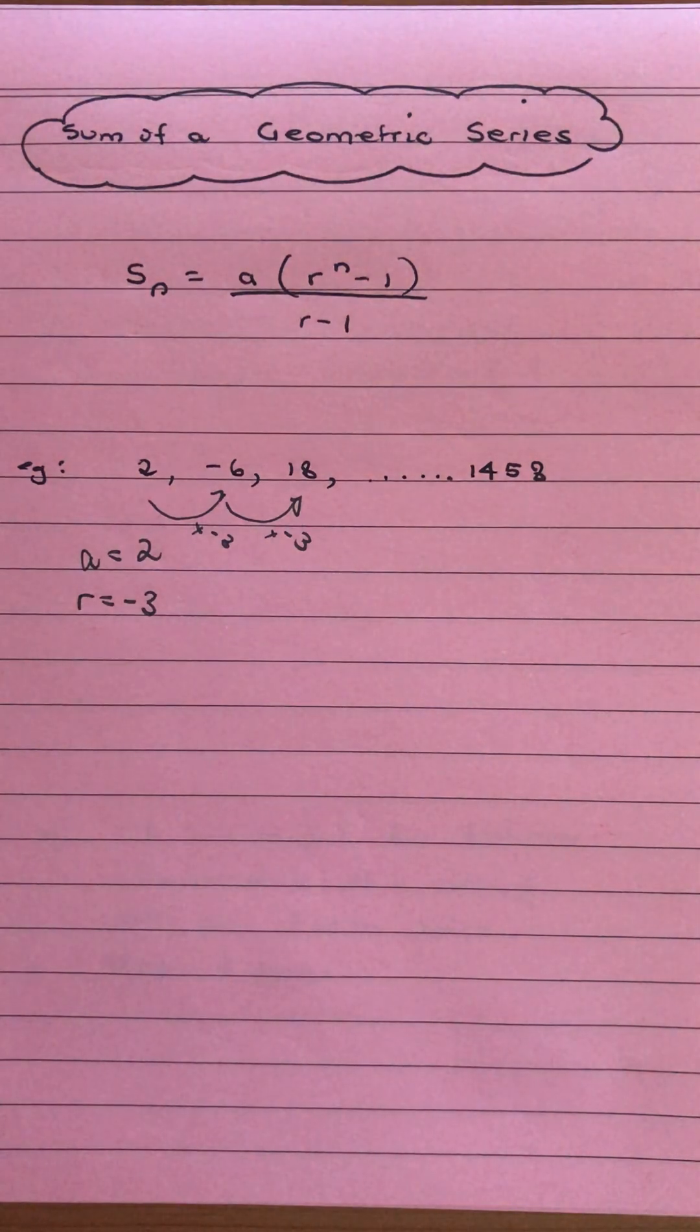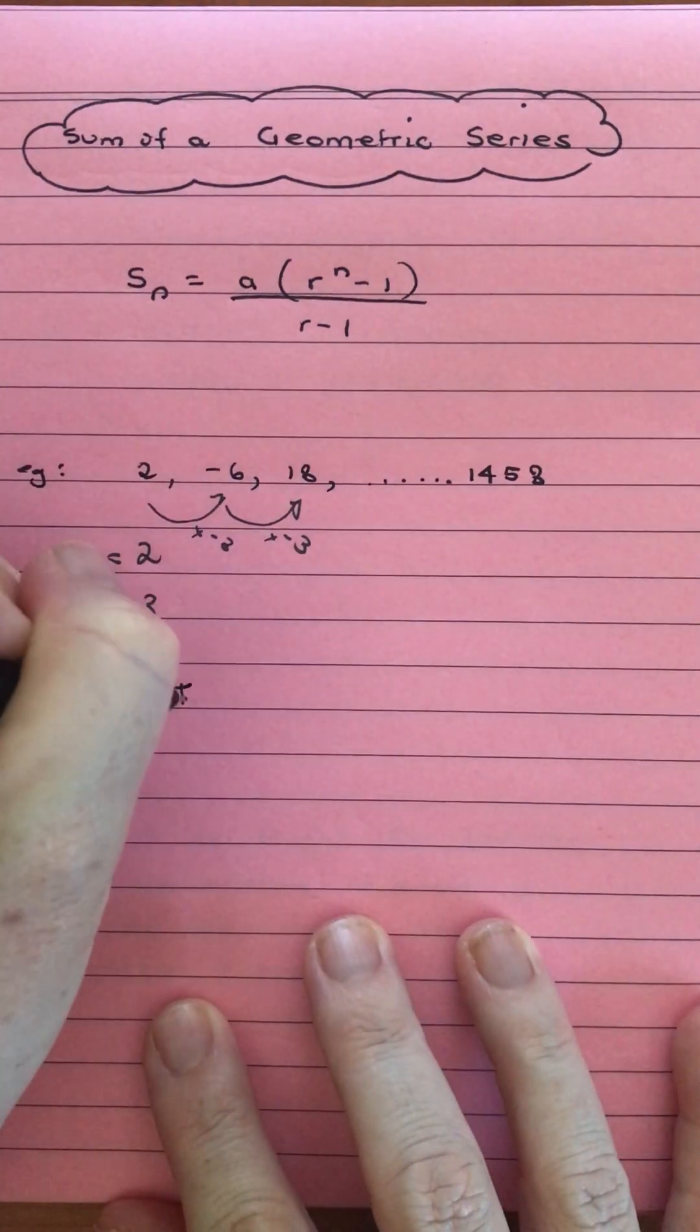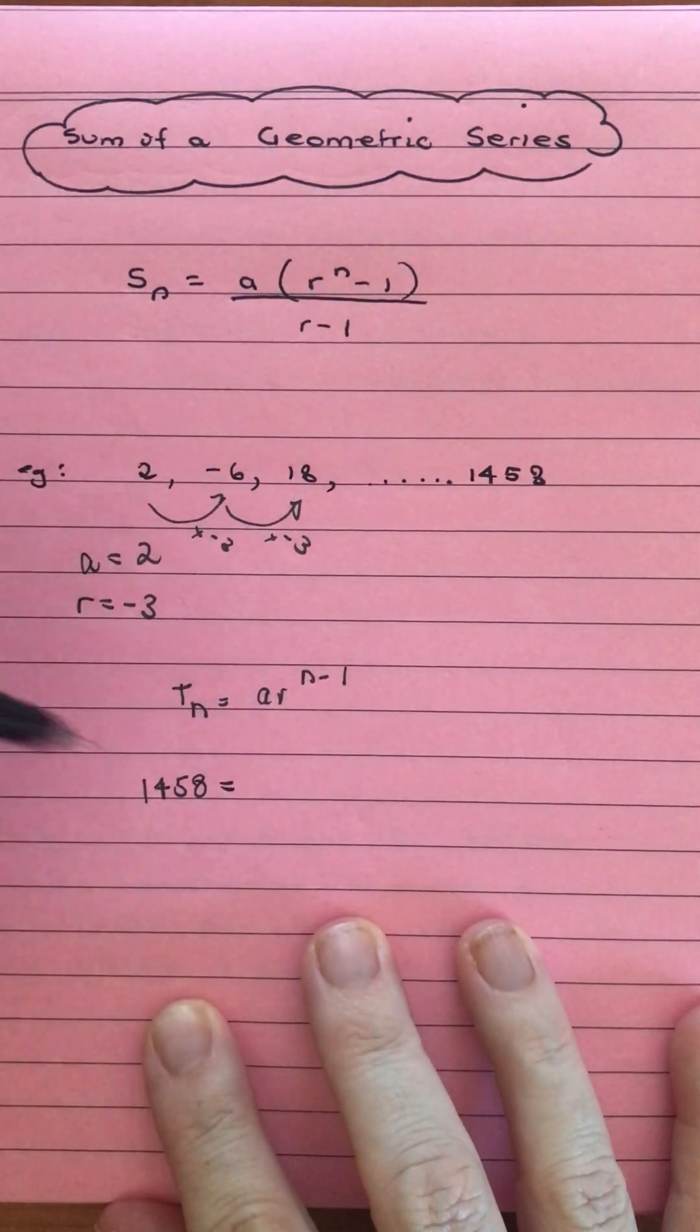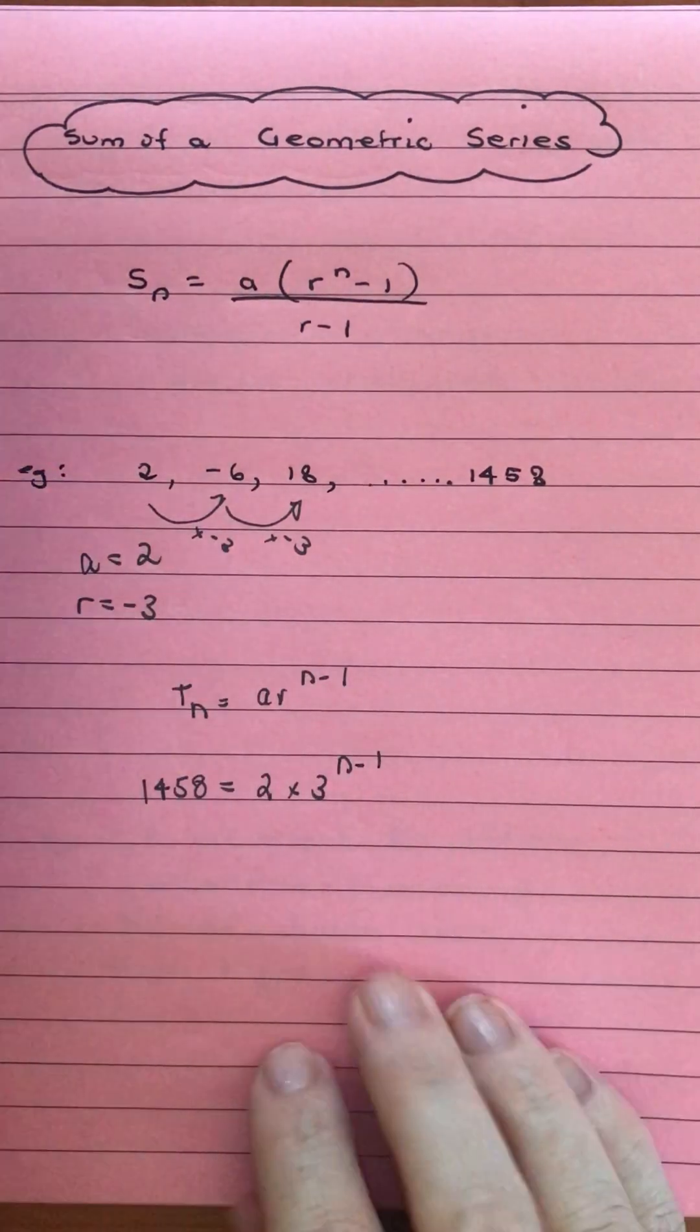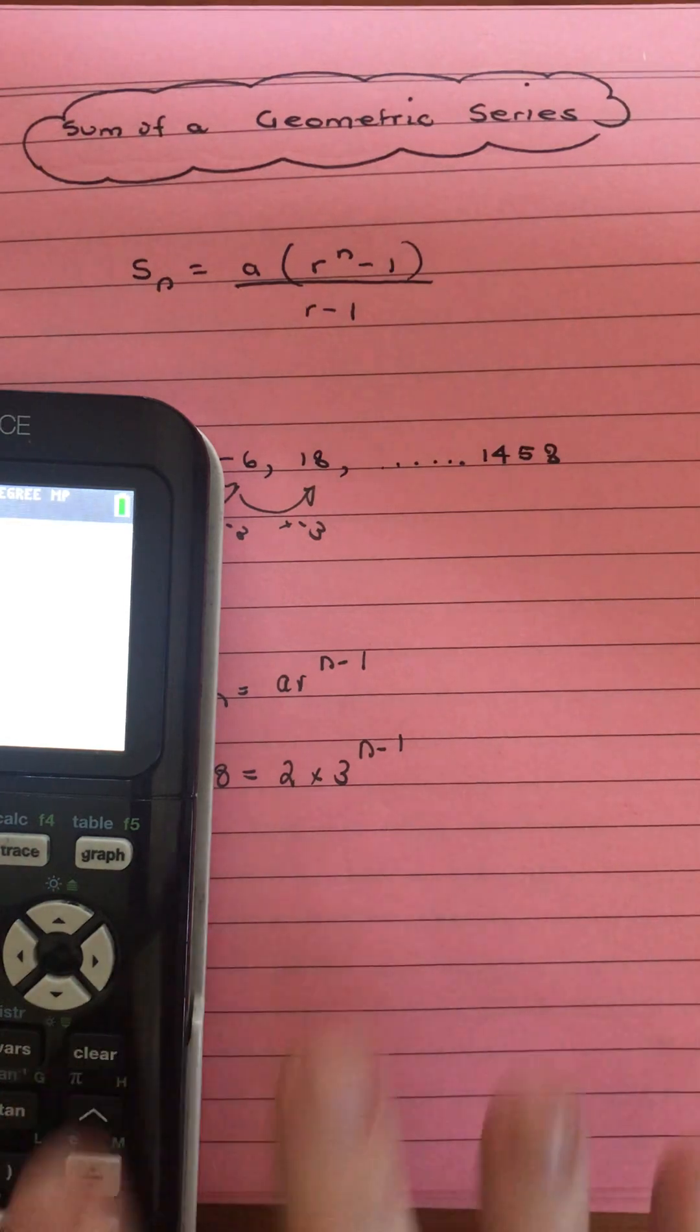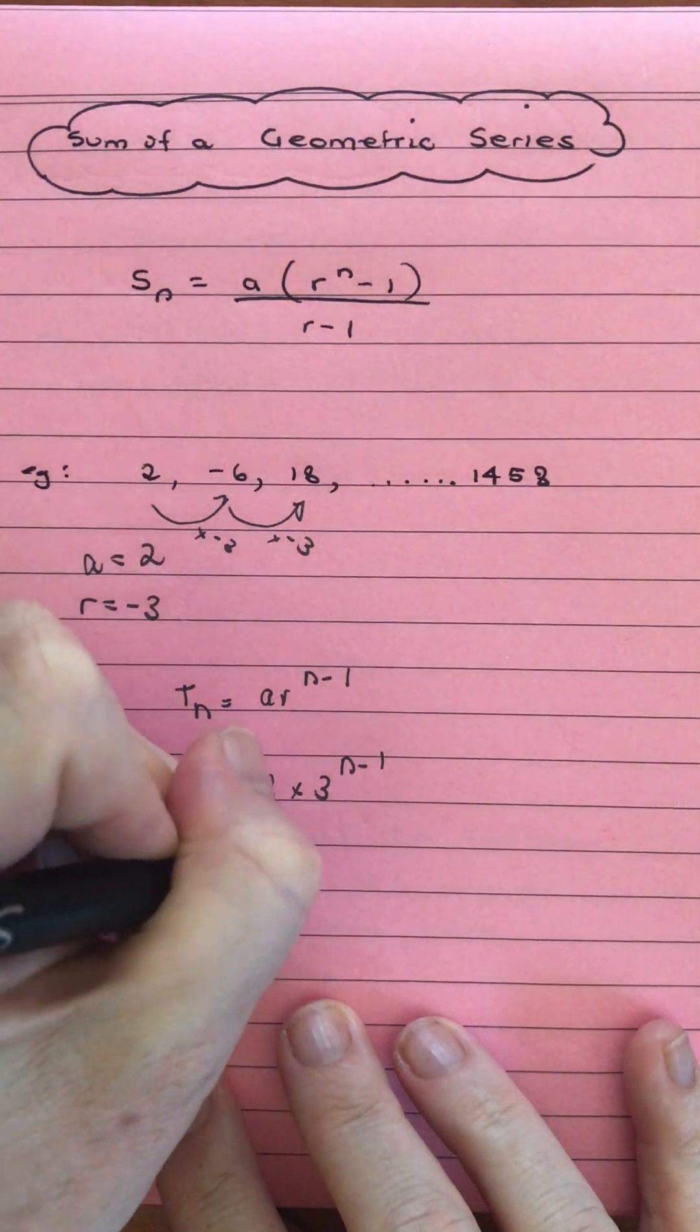We also need an n value. Now we don't have an n value, we just know that it finishes at 1458. So that means we need to bring in our t_n is ar^(n-1). So we've got our 1458 is equal to 2 times 3^(n-1). I'll divide by 2 first. We get 729 is equal to 3^(n-1).